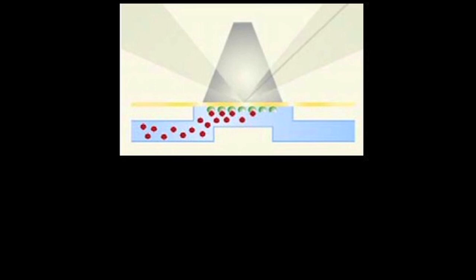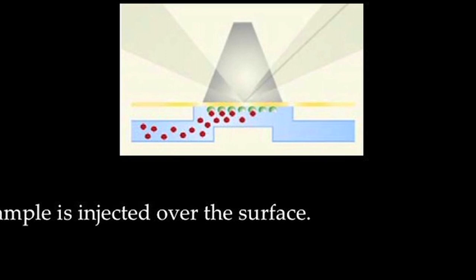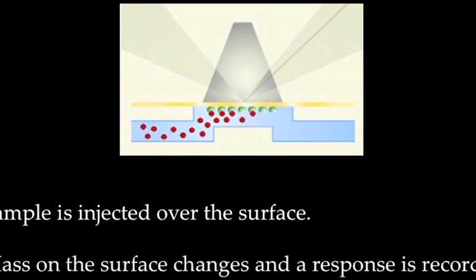Before we go ahead with the binding experiment, let us understand some important considerations. During sample injection, the analyte is injected over the surface with a constant flow and concentration. Analyte in the sample binds to the immobilized ligand on the surface. The mass on the surface changes and the response is recorded.